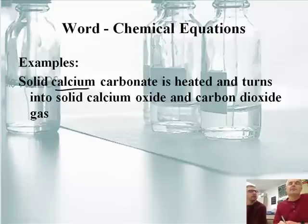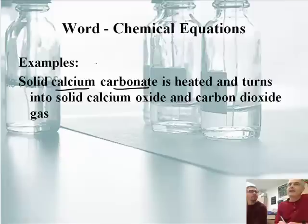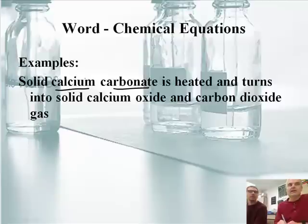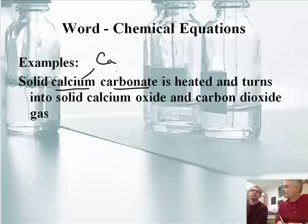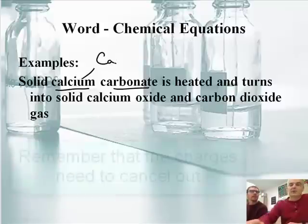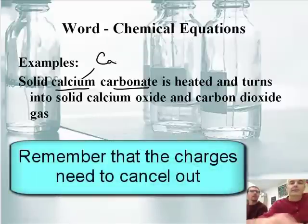Solid calcium carbonate. Calcium is Ca, carbonate is CO3. Before we do that, we need to figure out what the formula is because this is an ionic compound, and we have to play the Roman numeral charge game. There is no Roman numeral because calcium is not a transition metal.